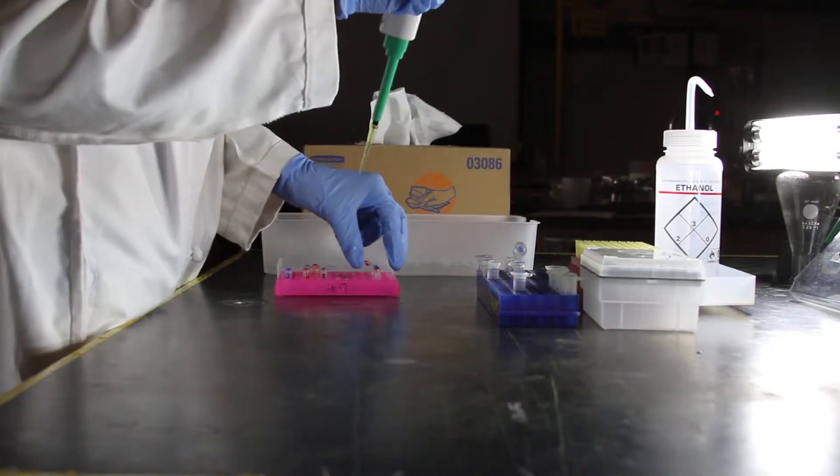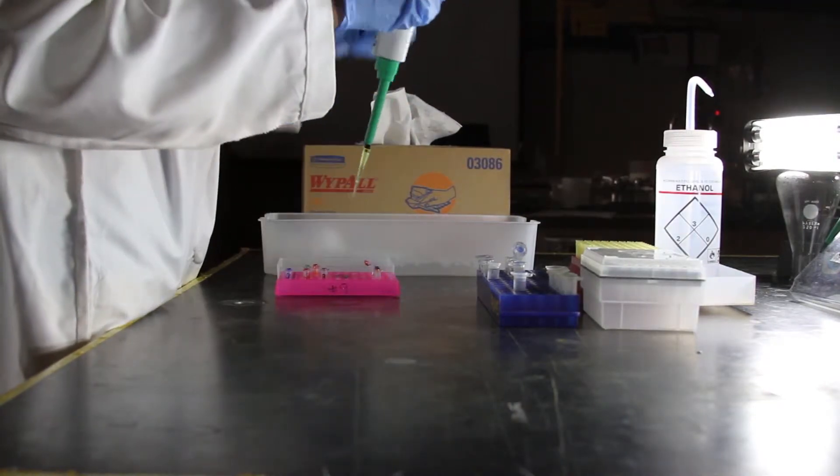Add distilled water to the tubes for a total volume of 42.5 microliters in each tube.